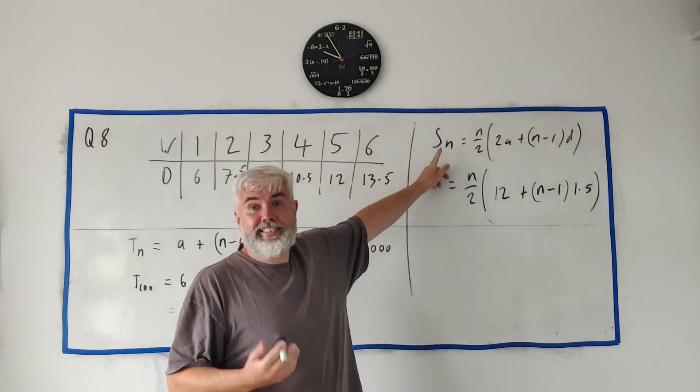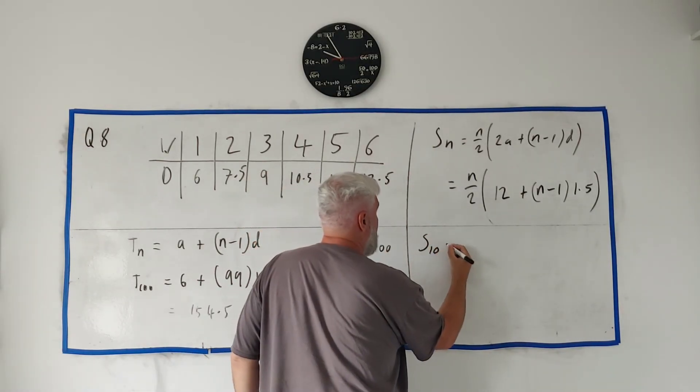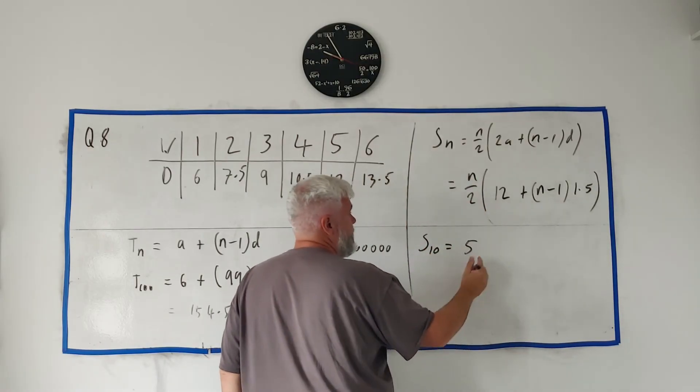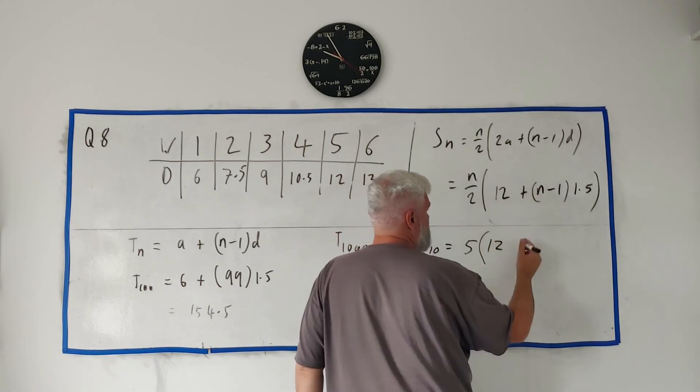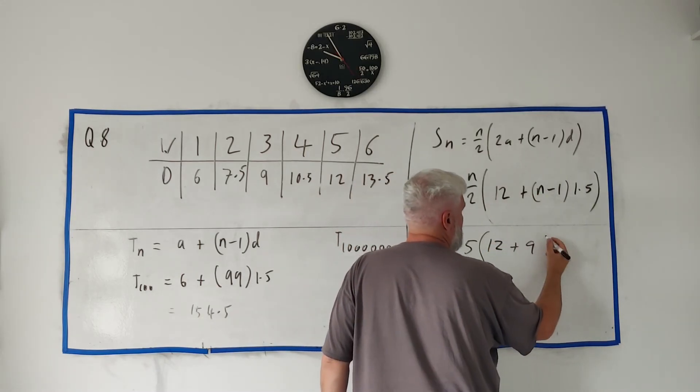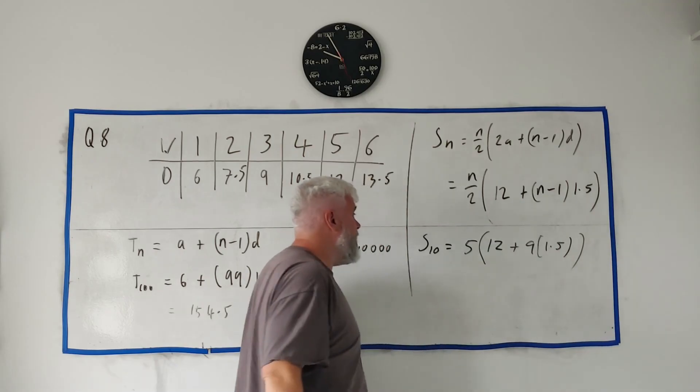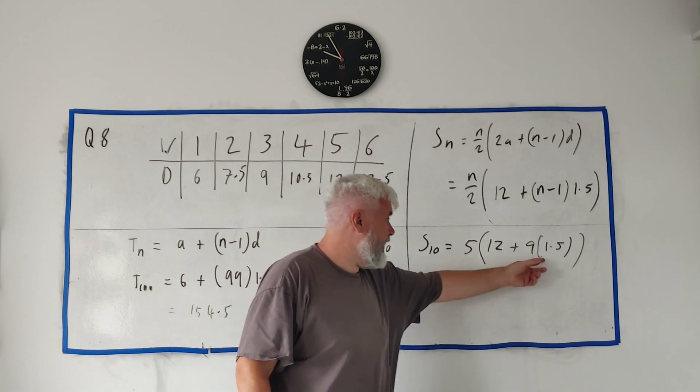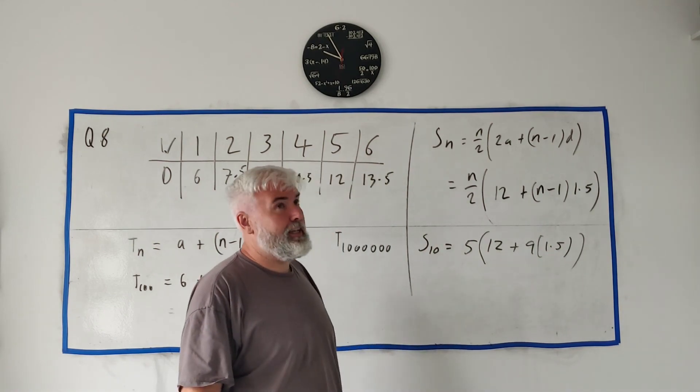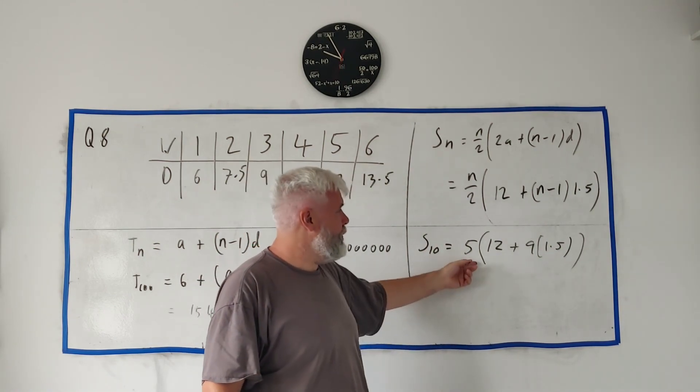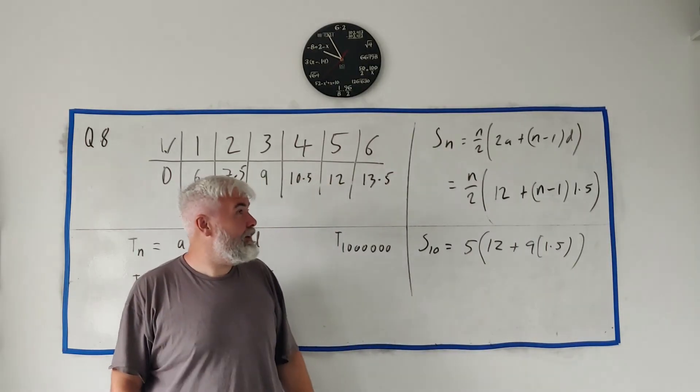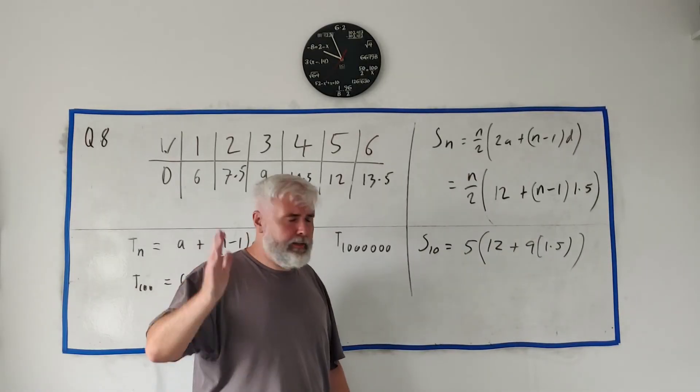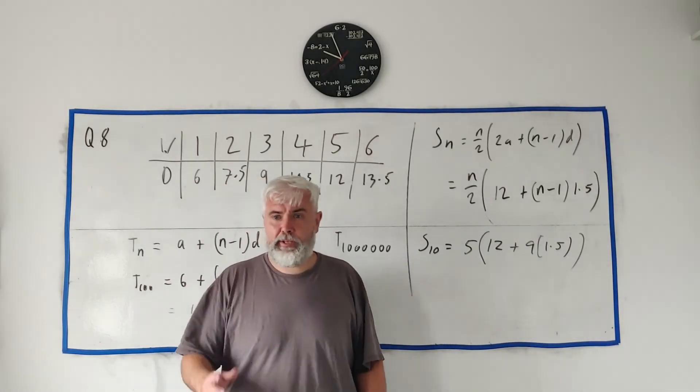But it's a little easier—a little faster, I should say—to do this way. s_10 is what we're looking for. s_10 is equal to 10 divided by 2, that's 5, multiplied by 12, 10 minus 1 is 9, multiplied by 1.5. Put this into a calculator. 9 times 1.5 is 13.5, plus 12 is 25.5, all multiplied by 5, I guess is 125 plus 2.5.